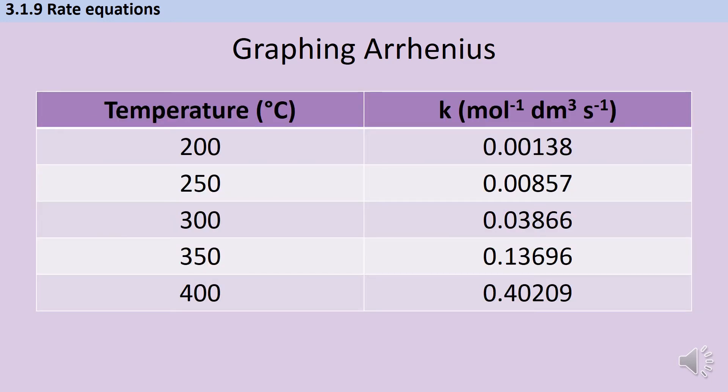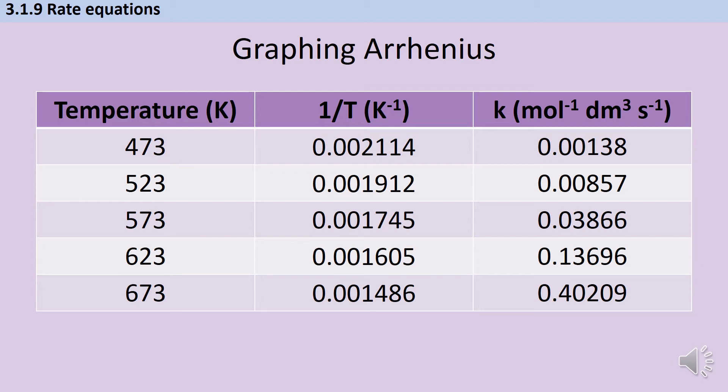Here's some typical data that I might be asked to use to solve a question like this. The first thing that I need to identify is that these temperatures are in Celsius, and they need converting to Kelvin by adding 273. Having done that, I can then take the reciprocal of each of those numbers. So I can add a column to my table and do 1 divided by 473. This gives me a series of reciprocals of the temperature.